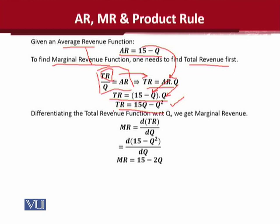The marginal revenue is derived from the total revenue value. We have actually obtained the marginal revenue from average revenue — but we went through total revenue to reach the marginal function. This was a numerical instance of how average revenue and marginal revenue are linked.